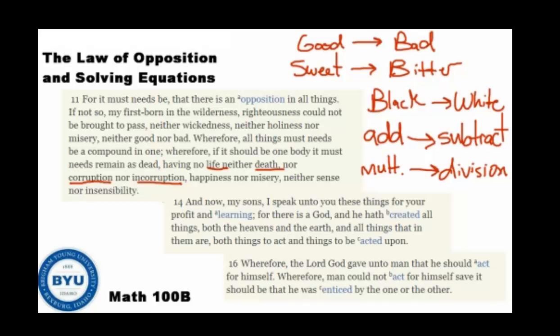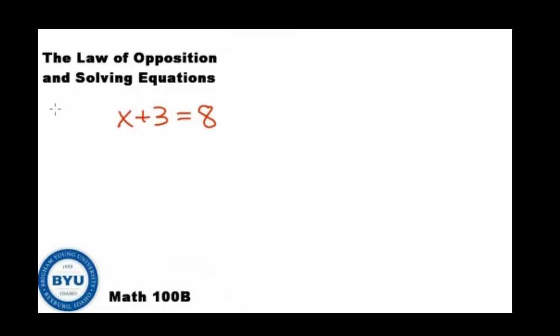The law of opposition is used for our profit and learning, and it can be applied in math as well. Here I have the problem x plus 3 equals 8. All of you know the answer is 5, and I'm not trying to be trivial, but I want you to see the law of opposition because it's going to help us solve harder problems. We have a plus 3, and the opposite of plus 3 would be minus 3. We apply the law of opposition to both sides of the equation — subtract 3 — and we're left with x equals 8 minus 3, which is 5. The plus 3 and minus 3 cancel out, leaving us with x on the left-hand side.